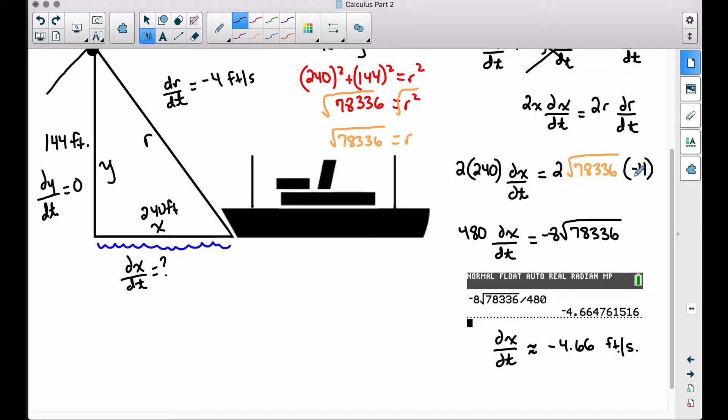And again, I didn't have my units of measurement up here, but since everything was given to us in feet, and the rate that we were given, the rate of change of the rope, was feet per second, this answer is going to have the same rate as well. Obviously, the number is different, but the rate, feet per second, remains the same.